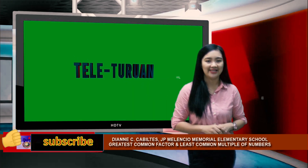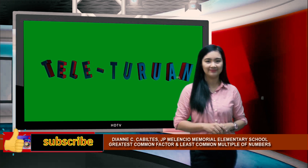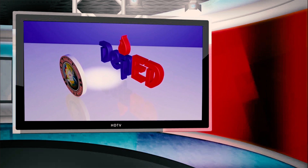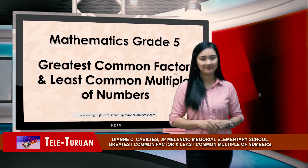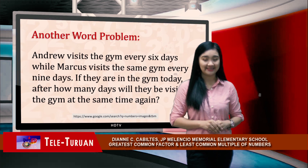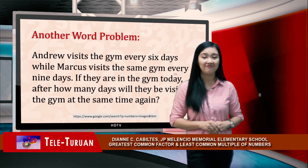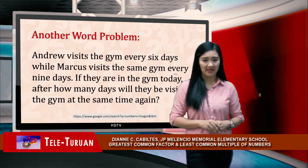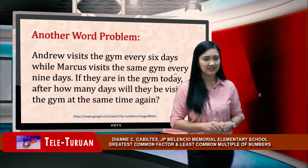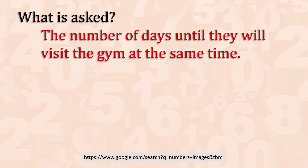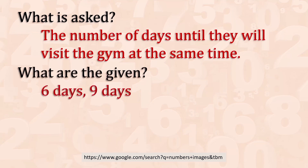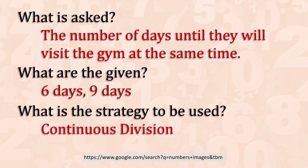Before we continue with our lesson, let's pause for a few reminders from our sponsors. And we're back. Let's move on with another example. Andrew visits the gym every 6 days, while Marcos visits the same gym every 9 days. If they are in the gym today, after how many days will they be visiting the gym at the same time again? What is asked? The number of days until they will visit the gym at the same time. What are the given? 6 days and 9 days. What is the strategy to be used? We're going to use continuous division.